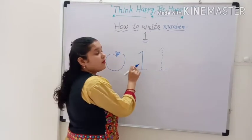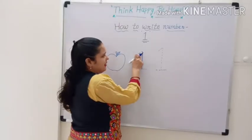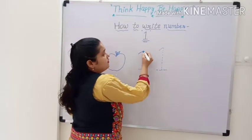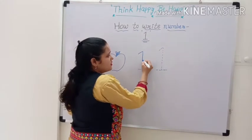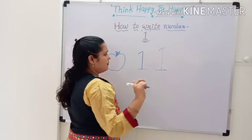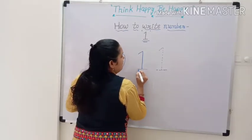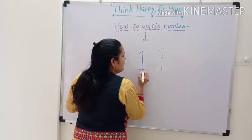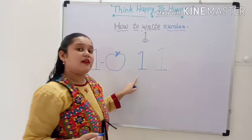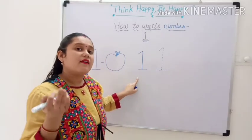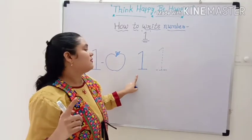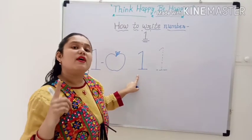First, we make a small slanting line. After that, we make a standing line. Then stop. Then we make a sleeping line — and it makes number one. Number one.